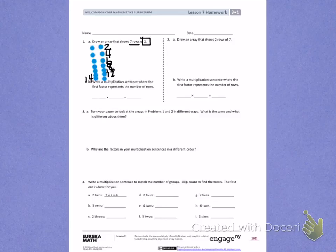Write a multiplication sentence where the first factor represents the number of rows. So looking back at my directions, I had to draw 7 rows with 2 in each row. So I skip counted and labeled, giving me a total of 14 dots.